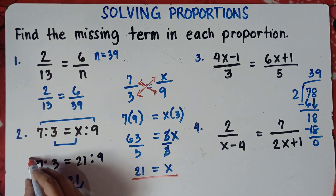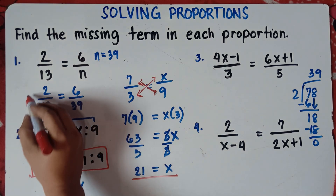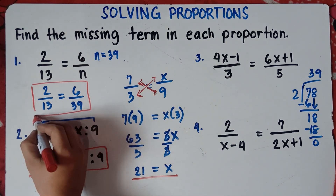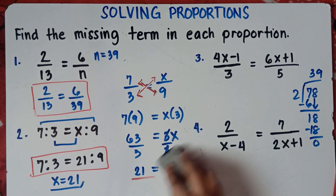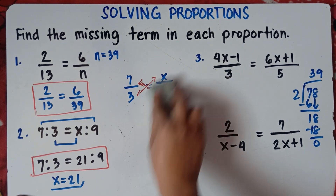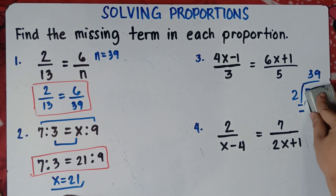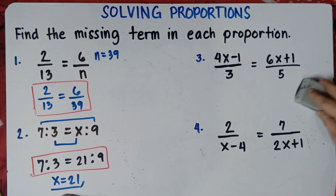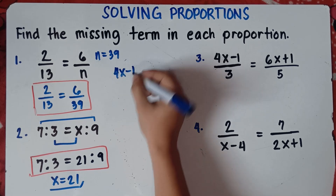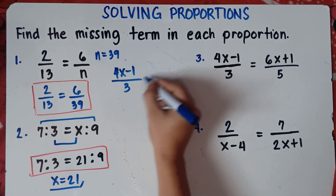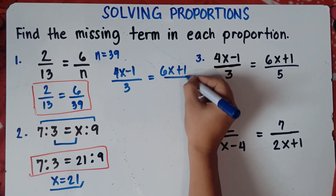We can complete the proportion: 7 is to 3 equals 21 is to 9. Our x is 21. And this is the complete equation for number 1 as well. Now let's try number 3. I hope you're still with me, class. So for number 3: (4x minus 1) over 3 equals (6x plus 1) over 5.